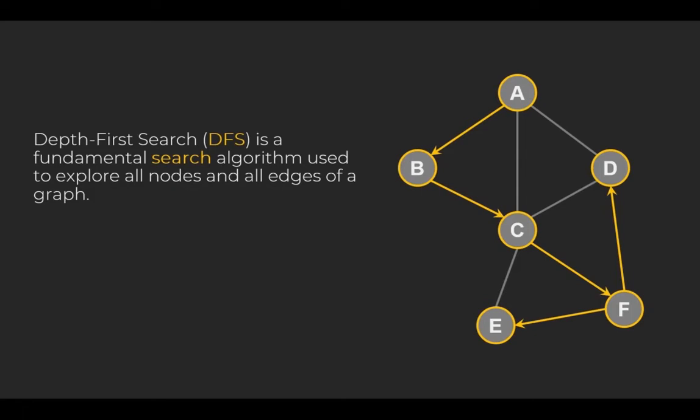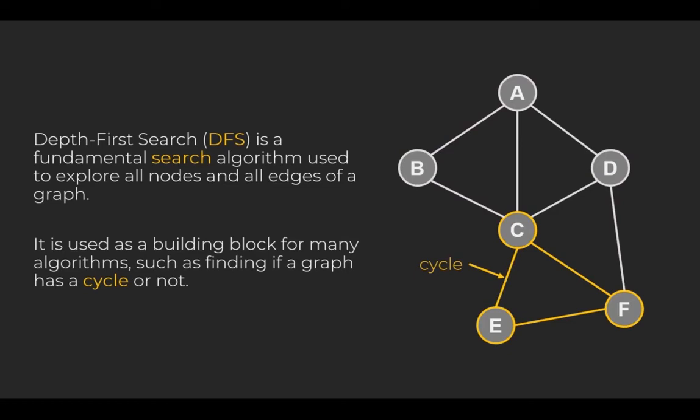Depth-first search is a fundamental search algorithm used to explore all nodes and all edges of the graph. For example, the graph shown here could be explored by starting at vertex A, then B, C, F, E and finally D. It is used as a building block for many algorithms, such as finding if a graph has a cycle or not. Here we can see C, E, F, one of the many cycles of the graph shown on the right-hand side.